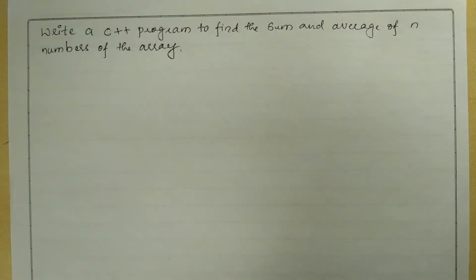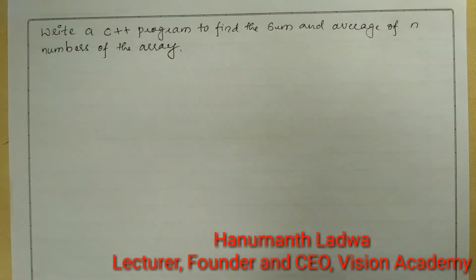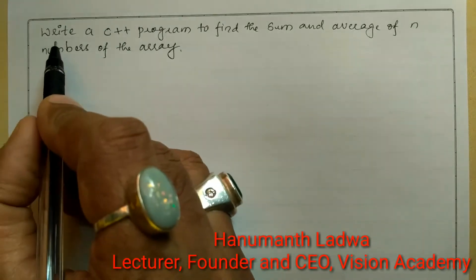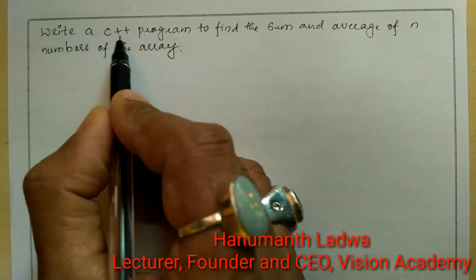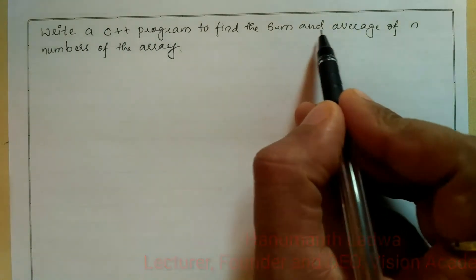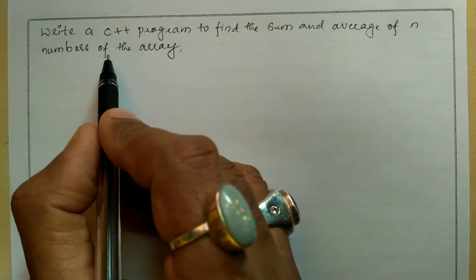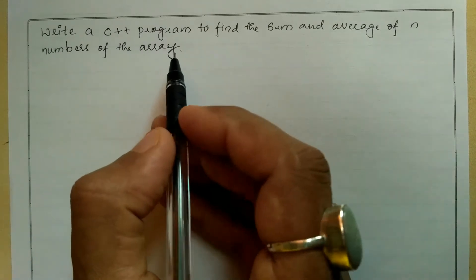Hello and welcome to Vision Academy. My name is Hanuman Sadwa and in this video we are going to write a C++ program to find the sum and average of n numbers of the array.